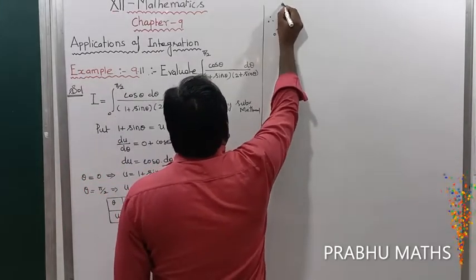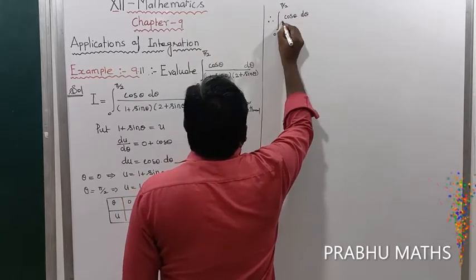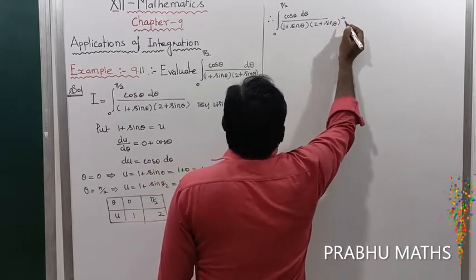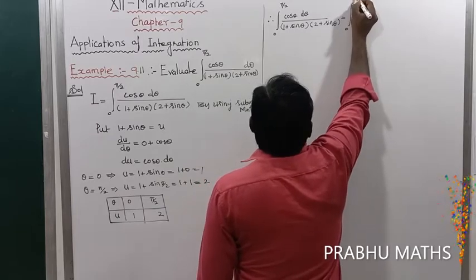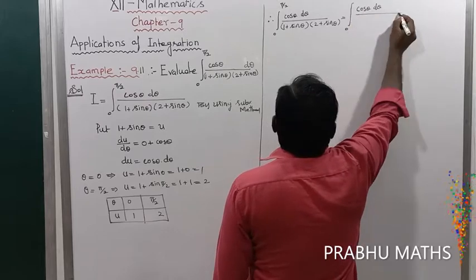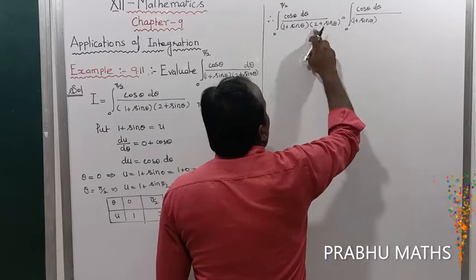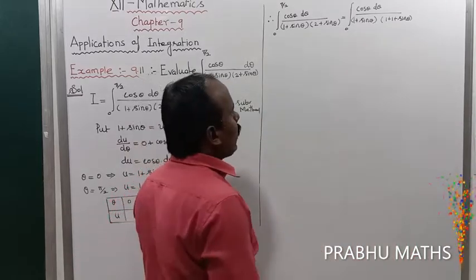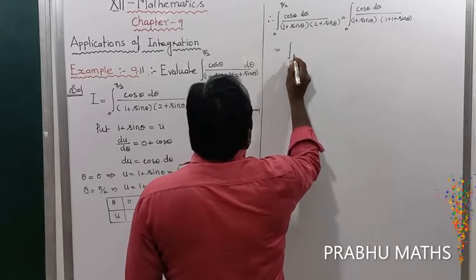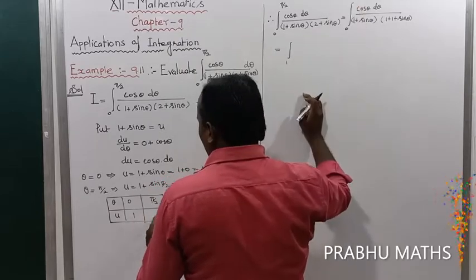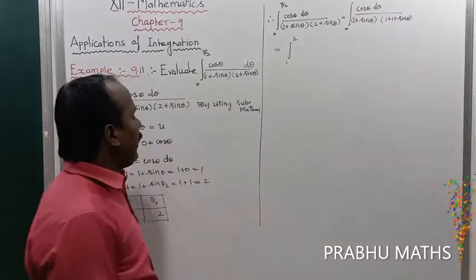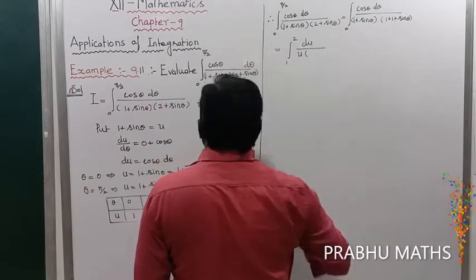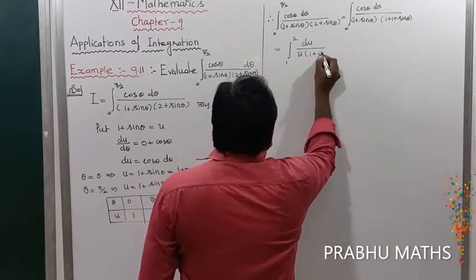Therefore the integral from 0 to π/2 of cos θ dθ divided by (1 + sin θ)(2 + sin θ). Now change the denominator: 2 + sin θ becomes 1 + (1 + sin θ), which is 1 + u. So cos θ dθ = du, and 1 + sin θ = u. The integral becomes ∫ from 1 to 2 of du divided by u(1 + u).